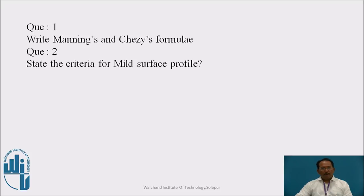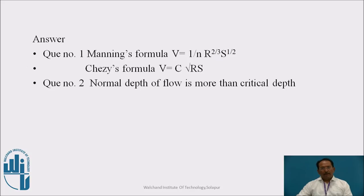So my questions are, you have to write the Manning's and Chezy's formula and what is the criteria for mild surface profile? Chezy's and Manning's formula are for measurement of velocity. For Manning's it is V equals 1 upon n, r to 2/3 and s to 1/2 where n is Manning's coefficient, r is hydraulic mean depth and s is slope. Chezy's formula is V equals C times square root of rs, c is Chezy's constant, r is hydraulic mean depth and s is slope. For question number 2, normal depth of flow is more than critical depth then it is a mild surface profile.